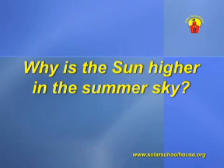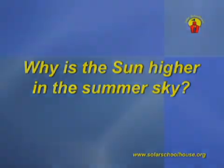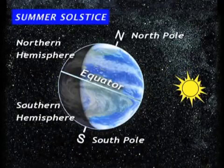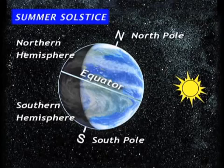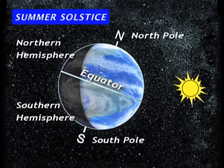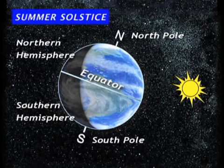Every year, the Earth travels around the sun in a huge circular path through space. During summer in the Northern Hemisphere, the North Pole is tilted toward the sun. This makes the sun's path higher in the sky and causes the northern half of the Earth to receive more light and heat than it does during the winter. On the first day of summer, around June 21st, the Northern Hemisphere is tilted the most toward the sun. This is called the summer solstice, and the sun's path is higher in the sky than on any other day of the year. Because the sun is in the sky for more hours, the summer solstice is also the longest day of the year.